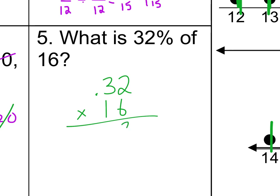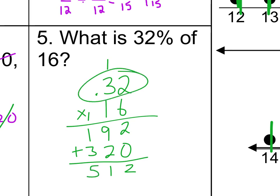6 times 2 is 12. 6 times 3 is 18, plus 1 is 19. Drop the 0. Then we just have the 2 and the 3, because that's times 1. Now we add those together, 11, 3, 4, 5, and we need two decimal place values, because there were two in our answer, so it is 5 and 12 hundredths is 32% of 16.